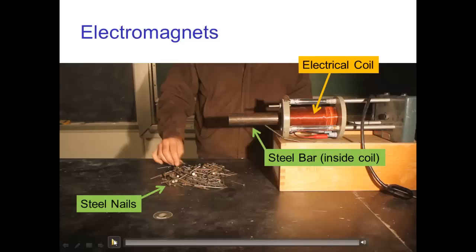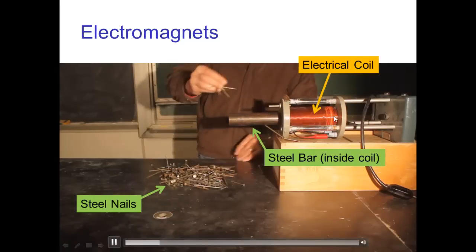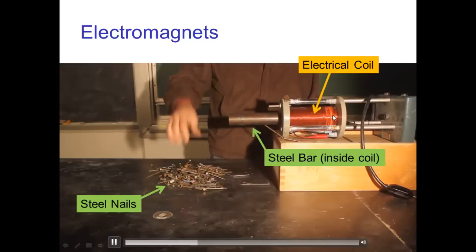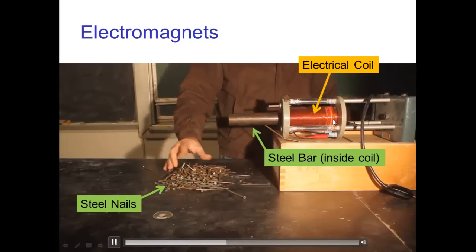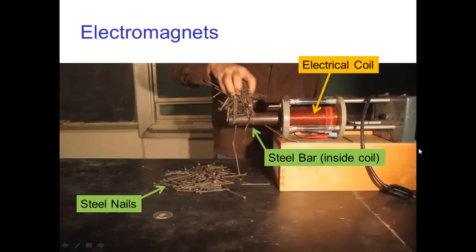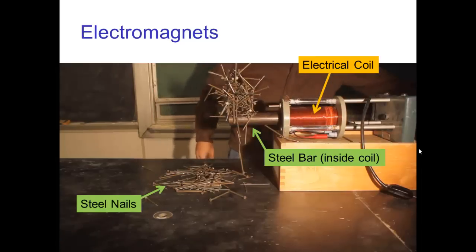Here's an example of that, I have an electric coil. A coil is just wire wrapped many times around in a circle. So now I'm turning on the electromagnet, now I'm turning it off.